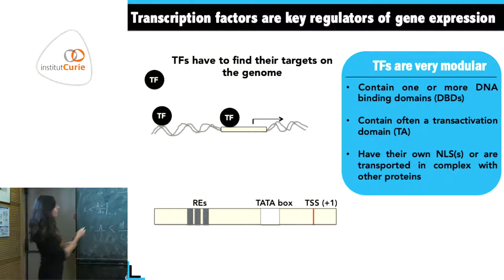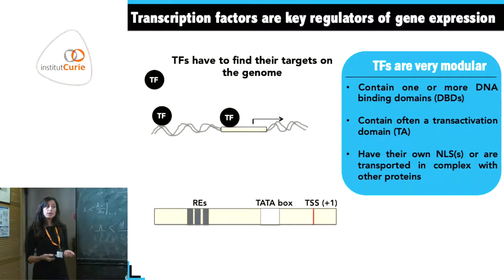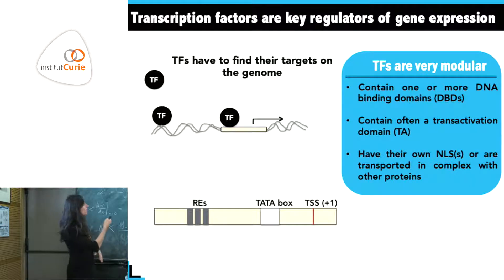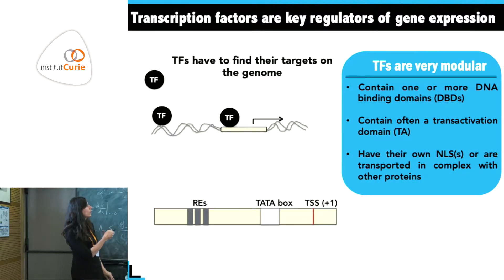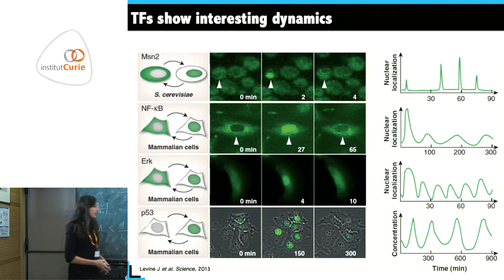If we zoom into this region, there are a few elements to keep in mind. There are so-called response elements — specific sequences recognized by the transcription factor where it binds with sequence specificity. Usually you also have a TATA box where the TATA binding protein binds, and then a transcriptional start site where transcription begins.